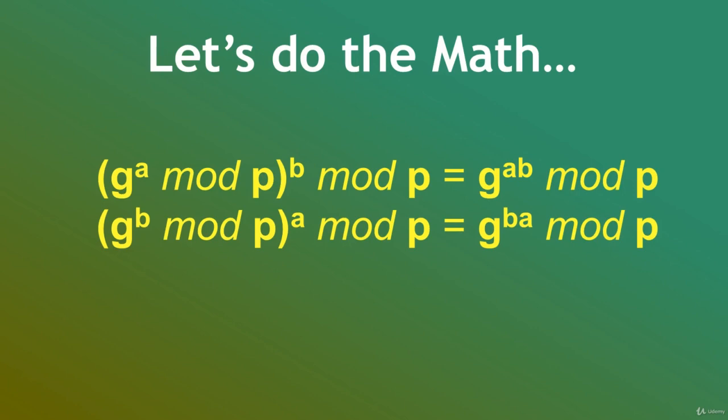Which, if you examine closer, means that you'll get the same answer no matter which order you do the exponentiation in. So I do it in one order, and you do it in another. I never know what secret number you used to get the same result, and you never know what number I used, but we still arrive at the same result.